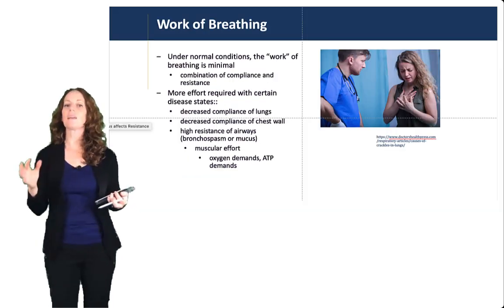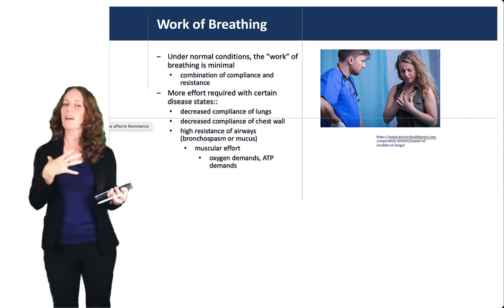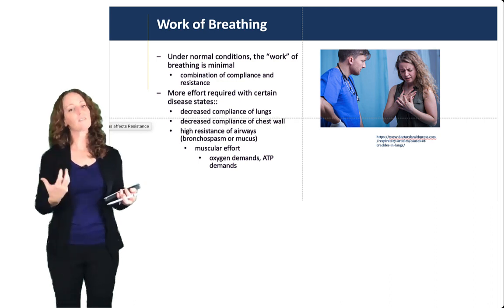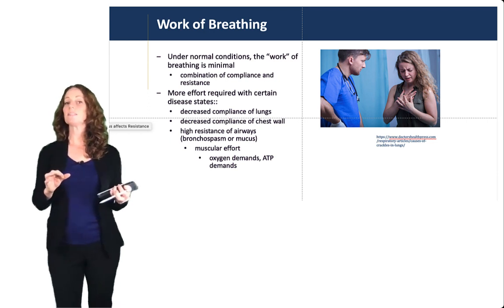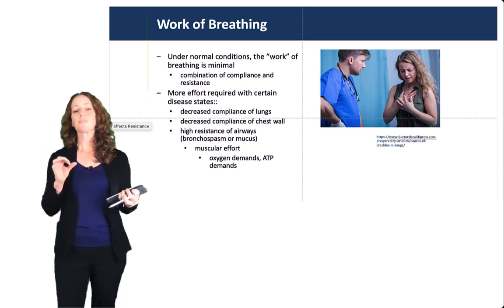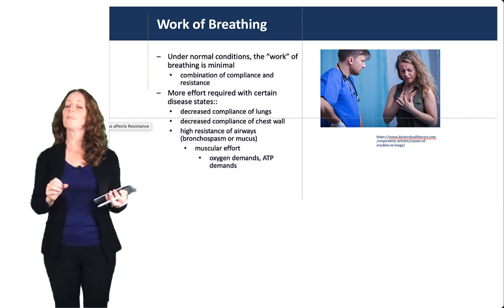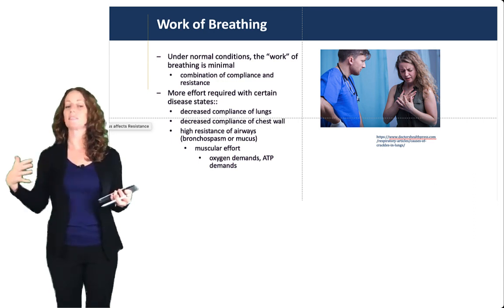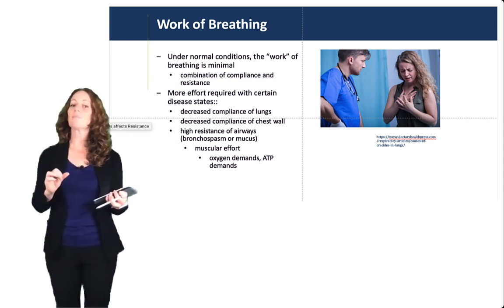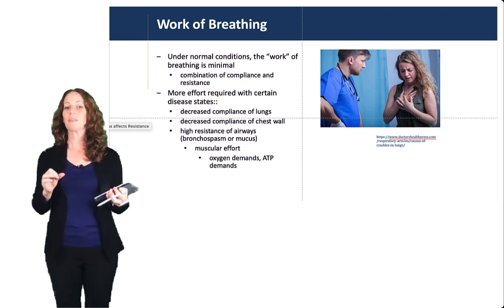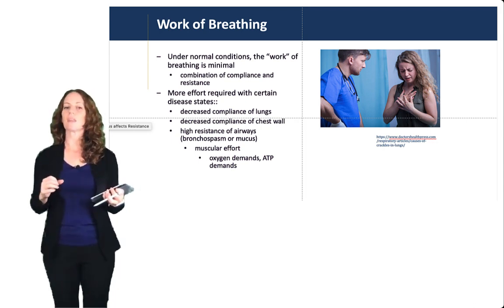Both compliance and resistance can change the work of breathing — the perception of how hard it is to breathe. More effort is required in certain disease states. Problems with compliance in the lungs or chest wall create difficulty with expansion. High airway resistance from bronchospasm, bronchoconstriction, or excess mucus buildup also creates increased muscular effort to move air through the airways. This leads to higher oxygen and ATP demands when the work of breathing is elevated.